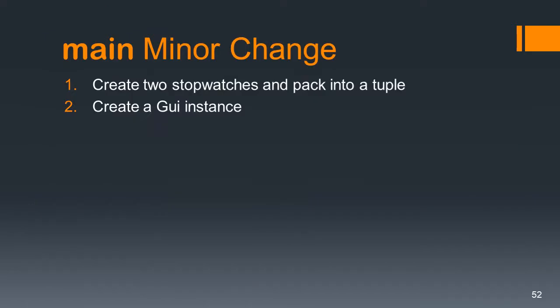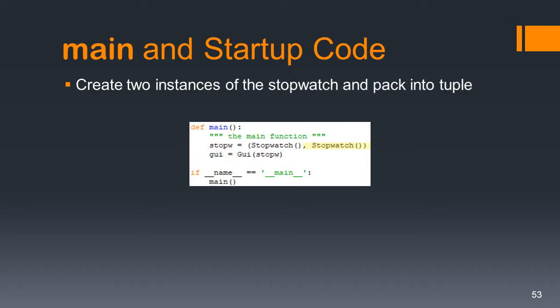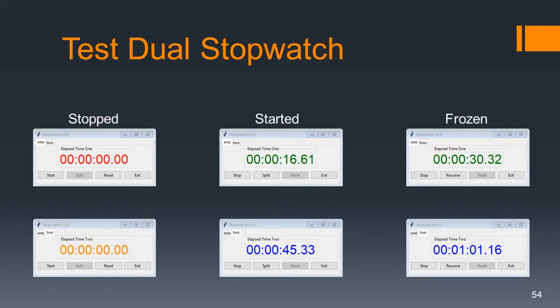Now it's time to change main, and it turns out there are very minor changes. All we have to do is create two stopwatches and pack them into a tuple — just take the old main and add a comma stopwatch with enclosing parentheses for the tuple. The GUI call hasn't changed at all. Now let's test it — hopefully you will see two stopwatches that you can start and stop independently, freeze them, and give this a good working out. If you see any errors, they'll pop up in the shell window; compare with the previous slides to debug.